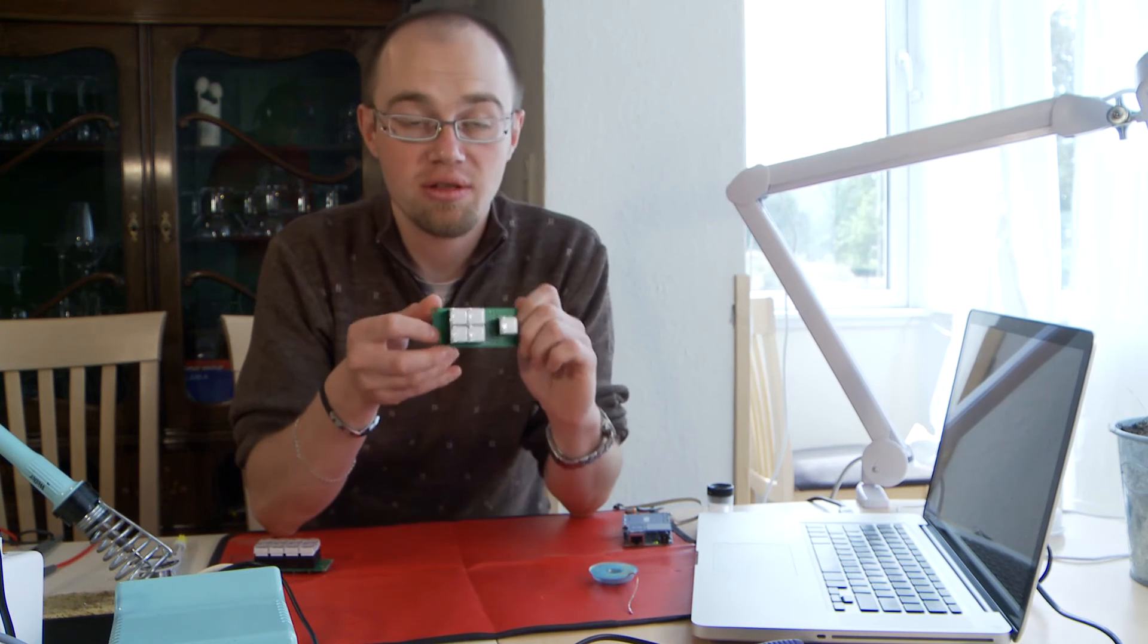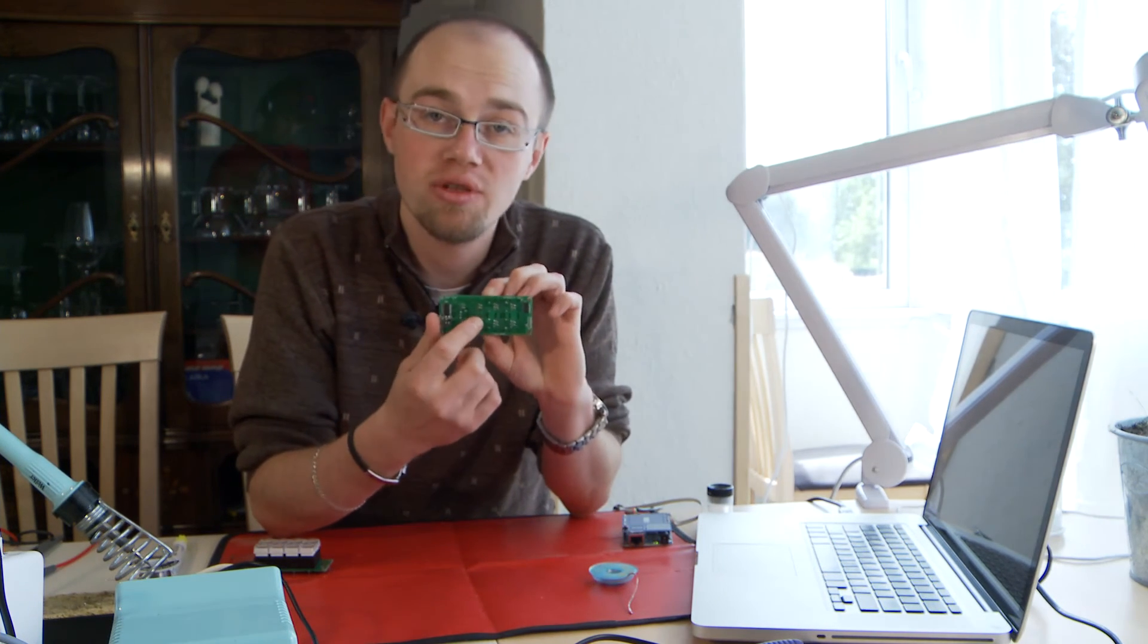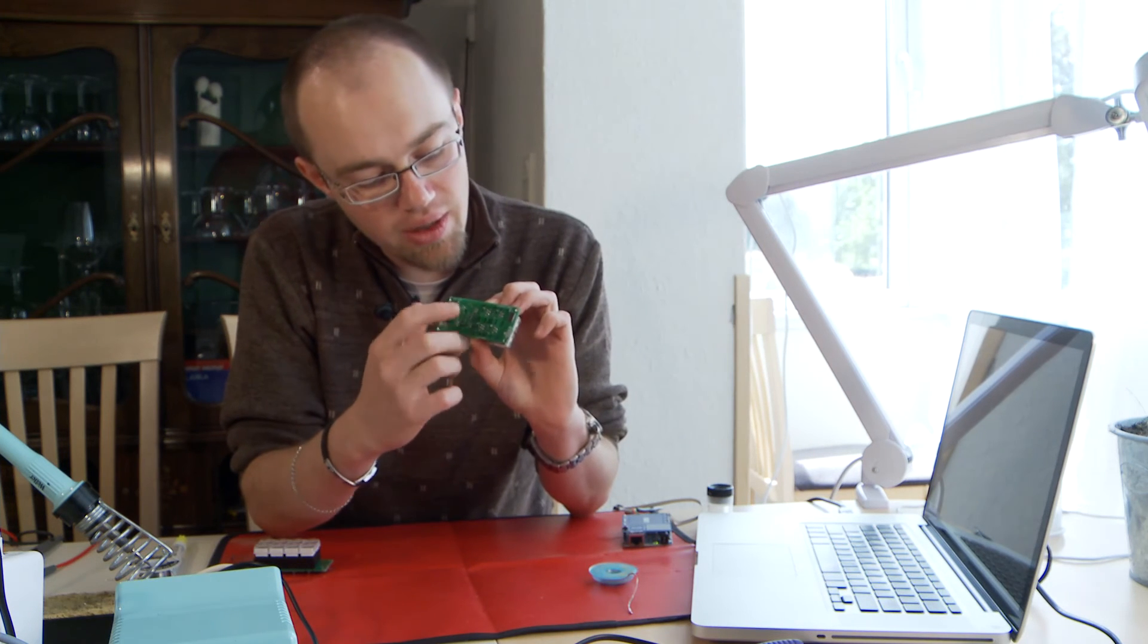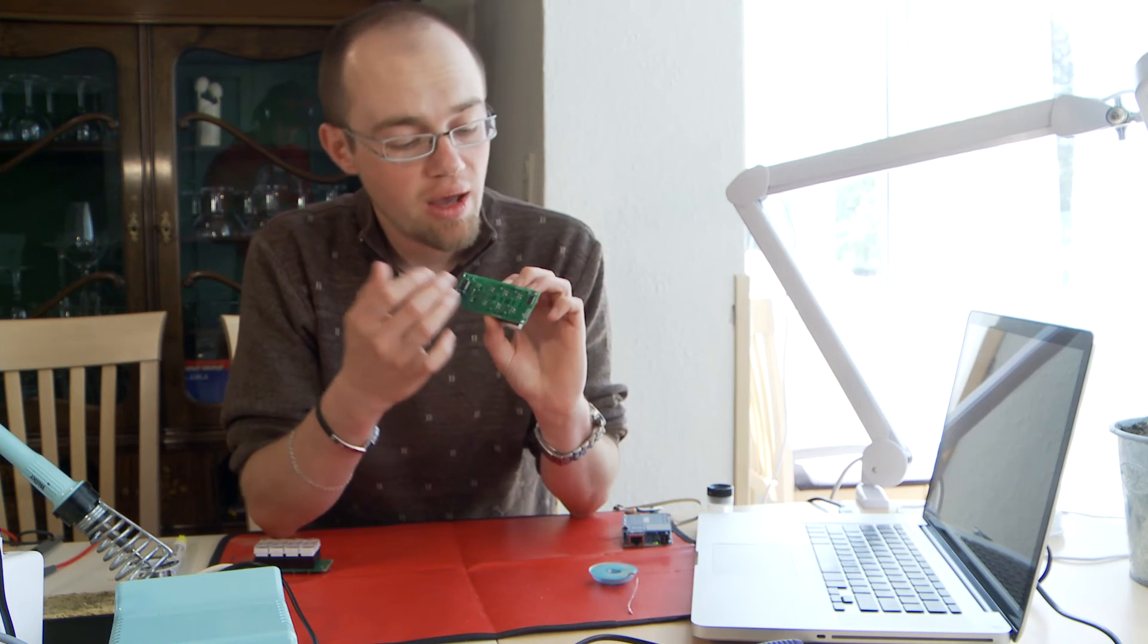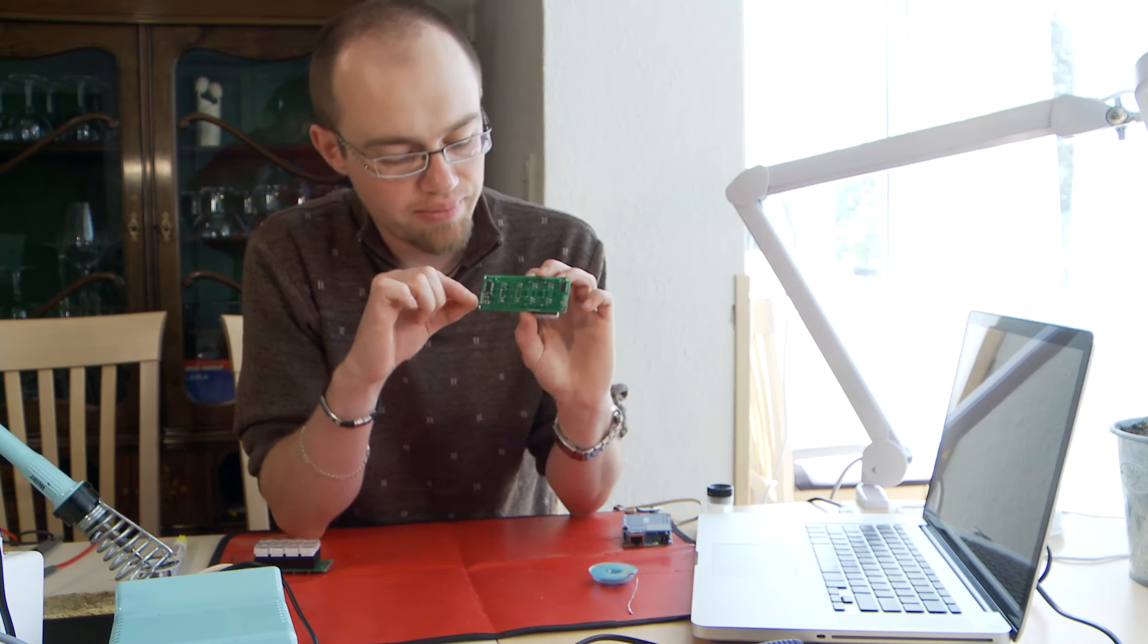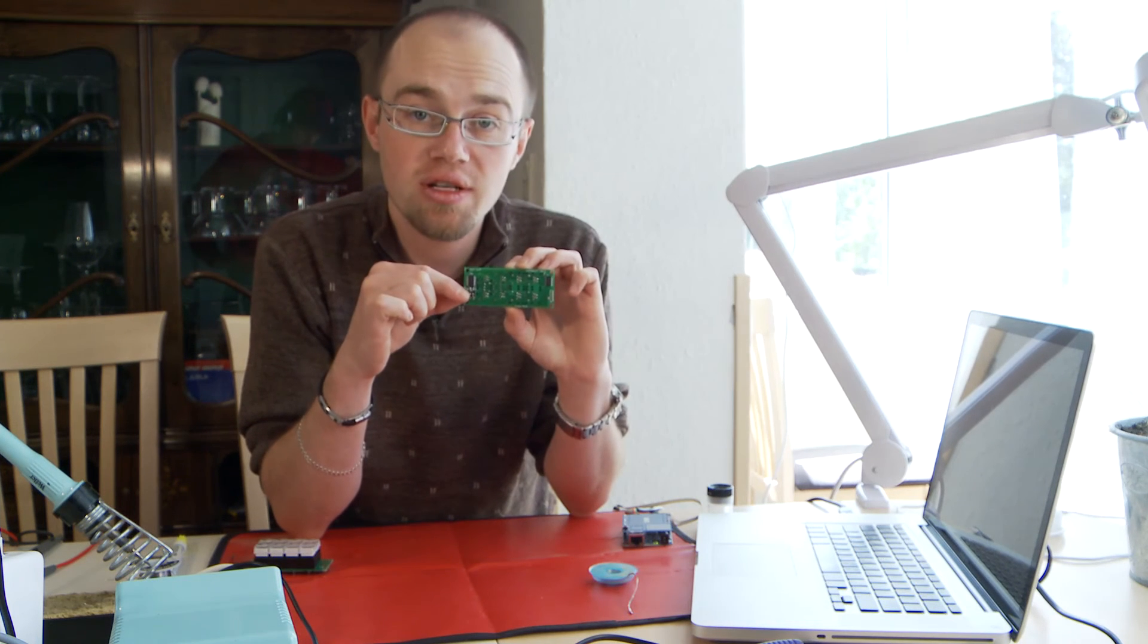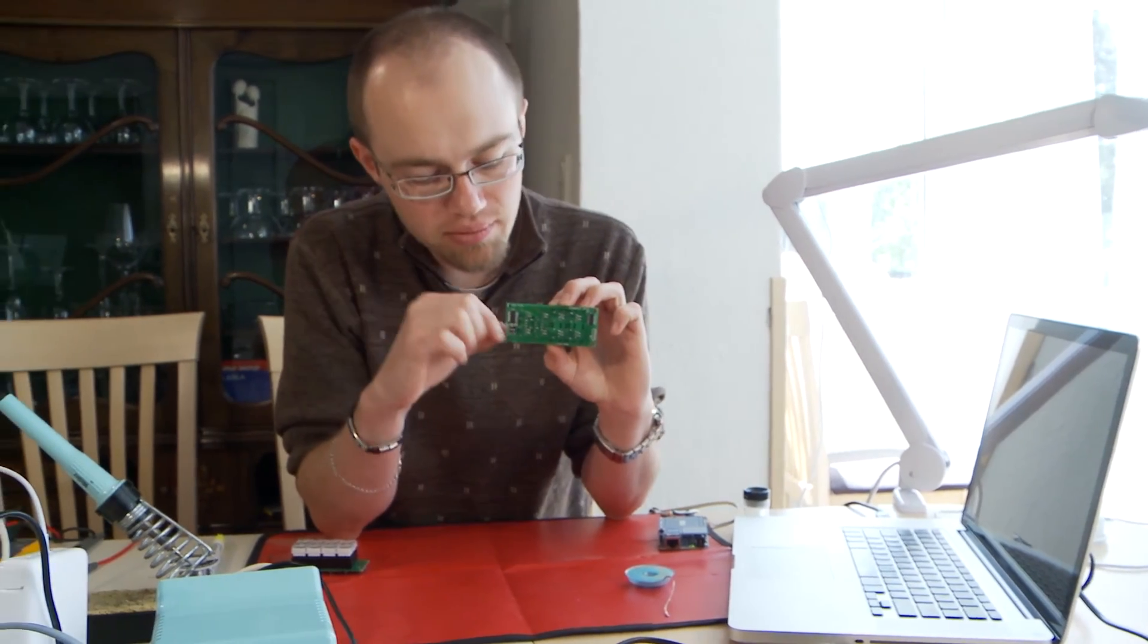This is the ready board. How I started? I started with the resistors. I soldered all of them. Then I soldered the capacitors and then I soldered the chips which are more difficult to solder. At the end I soldered this little switch for programming the board.